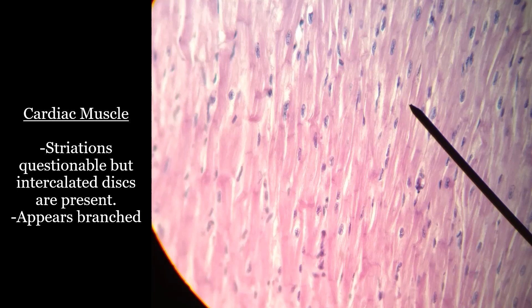It is very hard to see any striations in this picture. However, you do see intercalated discs — here's one, there's one, there's one. They're all over the place. So once you see those, you know it is cardiac. Cardiac muscle also branches, so it's not just a straight line. It tends to look less organized and less like neat, even rows than the other two types.